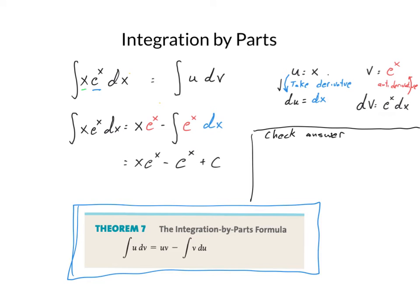And I check it when I take the derivative of this thing. I get 1 times e to the x plus x e to the x minus the derivative of e to the x, which is e to the x.